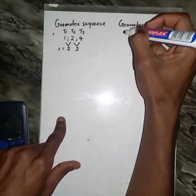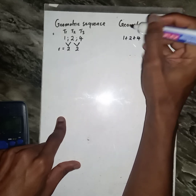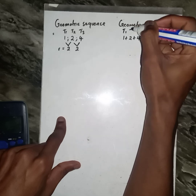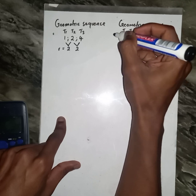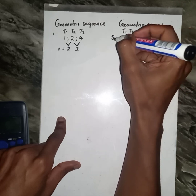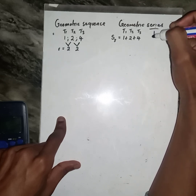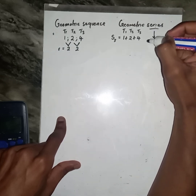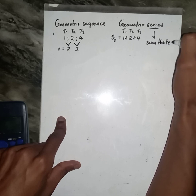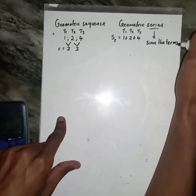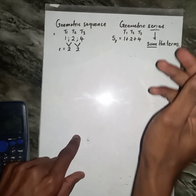Now let us consider the geometric series, given by 1 plus 2 plus 4. We have the sum of three terms. This is a geometric series — we sum the terms of a geometric sequence.